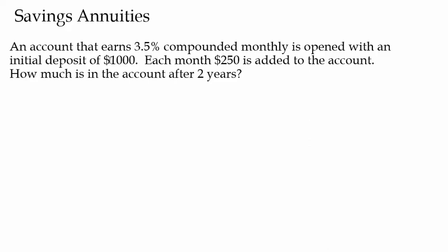Well, that's not really how people save money most of the time. Most of the time, they open an account with a certain amount of money, and then they're going to deposit a certain amount each month, set up a savings plan. So, for example, let's look at this. An account that earns 3.5% compounded monthly is opened with initial deposit of $1,000. Each month, $250 is added to the account. How much is in the account after two years?